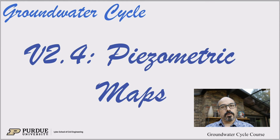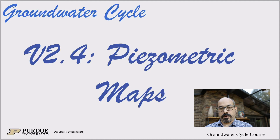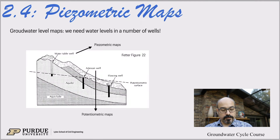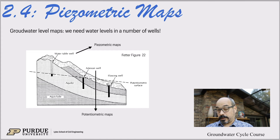Here we are moving to piezometric maps. Can we map the aquifer underground? That's really what it is. We'll see traditional methods to do this. Here's an example of groundwater level maps. We need the water levels in a number of wells or piezometers to do that.